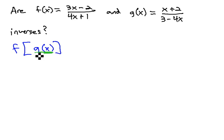So we have g of x, that's this x plus 2 over 3 minus 4x. That is going to be inside the f function, so x plus 2 over 3 minus 4x.